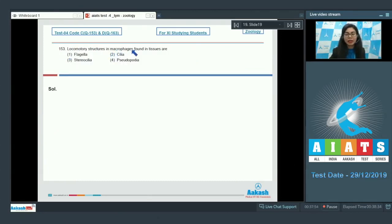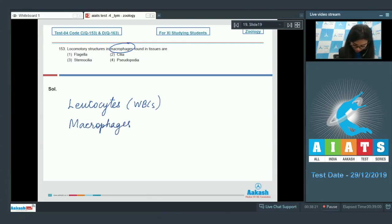Question 153: Locomotory structures in macrophages found in tissues are flagella, cilia, stereocilia, or pseudopodia? Which are the locomotory structures present in our macrophages in human body? There are two cells - leukocytes or WBCs and macrophages - these two cells show pseudopodial movements. And pseudopodial movements is due to the streaming of protoplasm. Because of this the surface of cell forms feet, false feet or pseudopodia. And because of these pseudopodial movements our leukocytes and macrophages travel to each and every part of body to engulf the attacking antigens or pathogens. So the locomotory structure of macrophages would be option number four, pseudopodia.